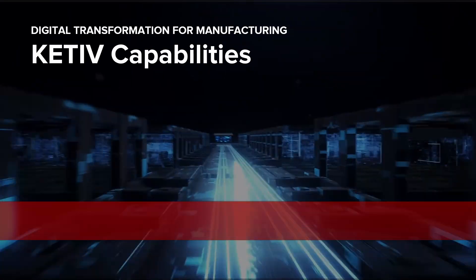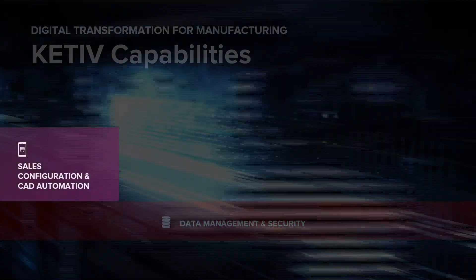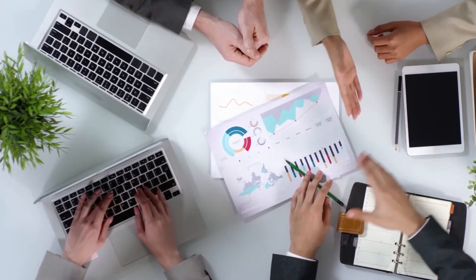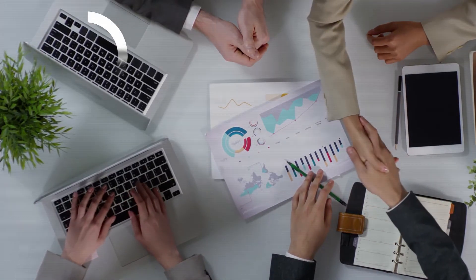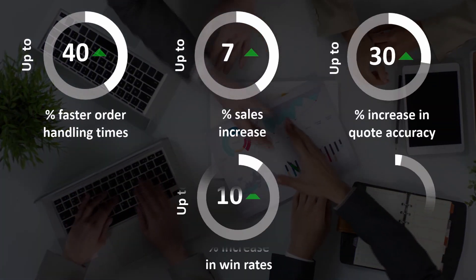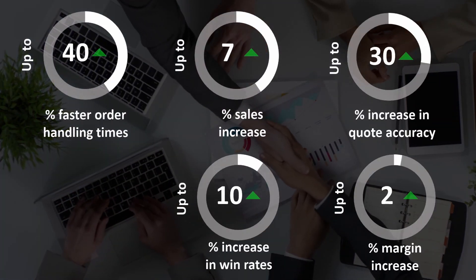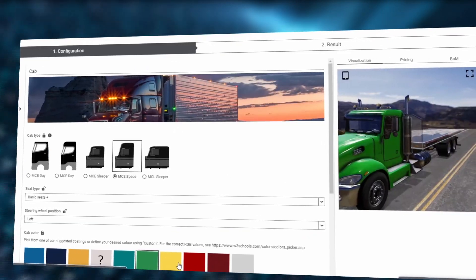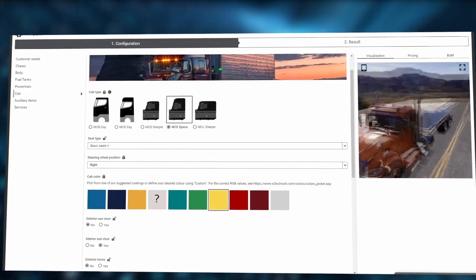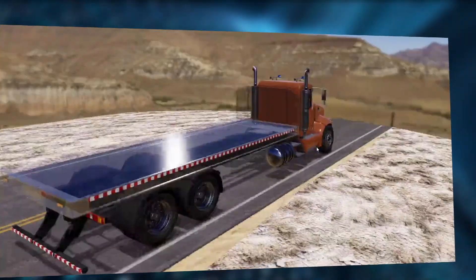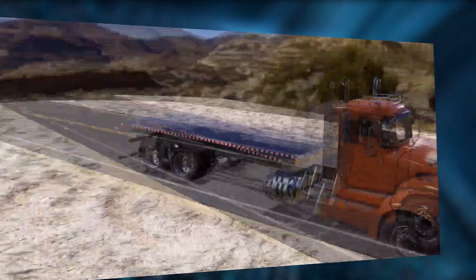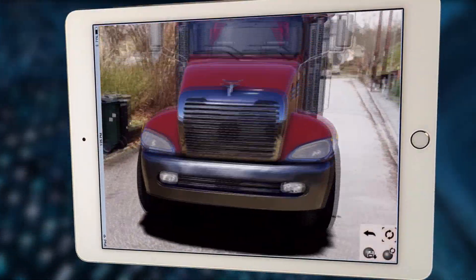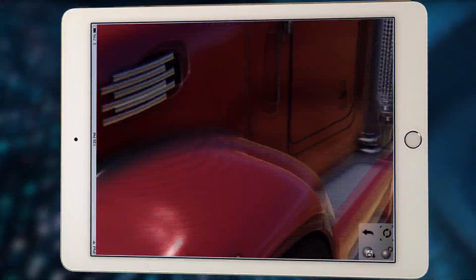Sales automation and configuration is at the front end of the manufacturing process, providing an enhanced customer experience that increases profitability. Beyond engaging visual configuration and accurate pricing and quotes for sales, configuration is the spearhead that can automate downstream processes, elevating the efficiency of sales, engineering, and production teams.